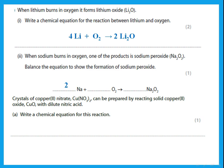Crystals of copper II nitrate can be prepared by reacting solid copper oxide with dilute nitric acid. Write the equation. Copper II oxide is CuO, reacting with nitric acid to give copper nitrate plus water — because a base plus an acid gives a salt plus water. Put 2 in front of the nitric acid in order to balance the equation.